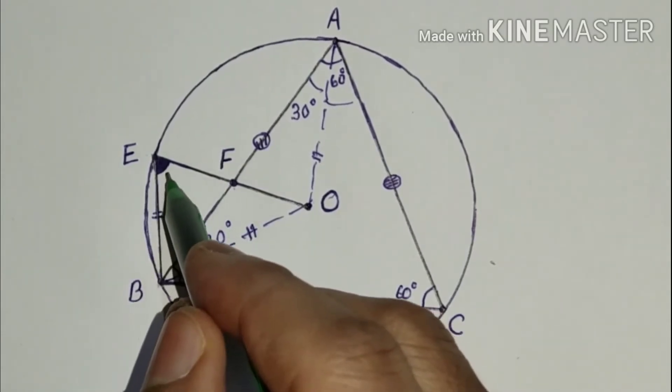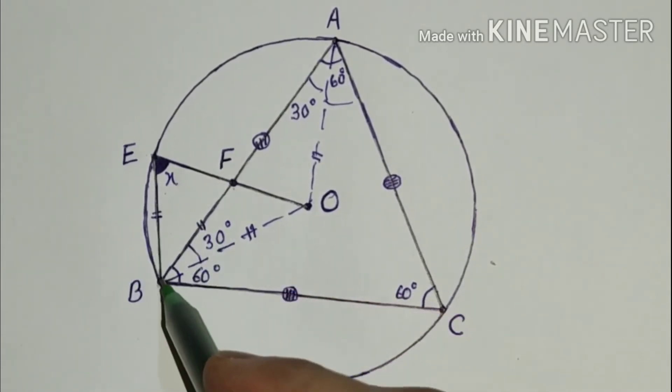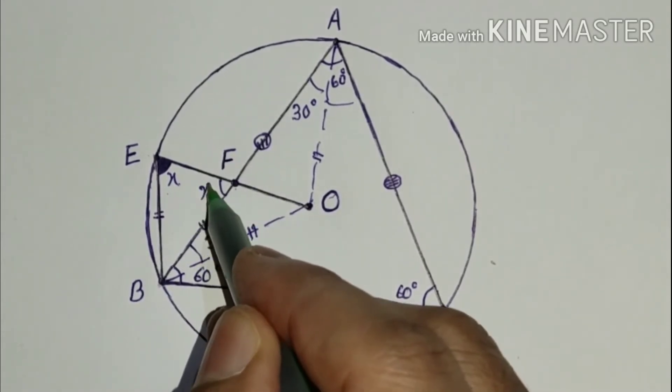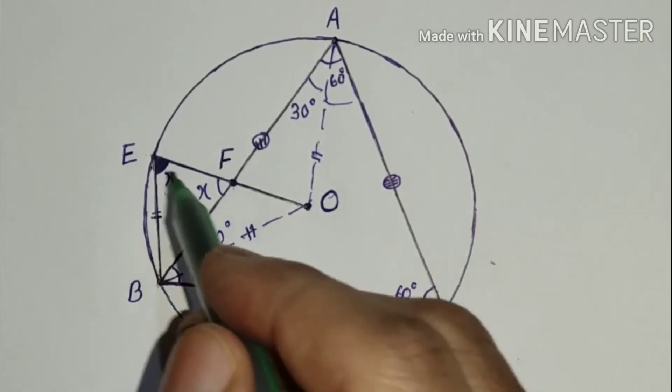Now let us suppose this angle is X. So because BE is equal to BF, this will also be X. Base angles of isosceles triangle.